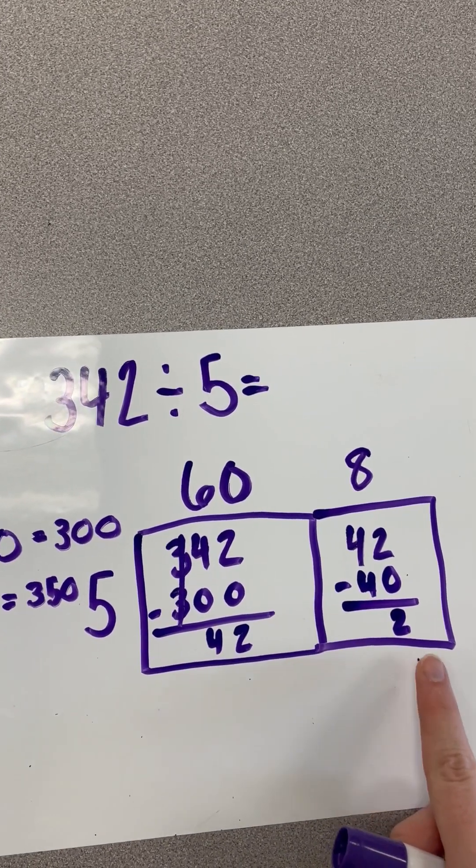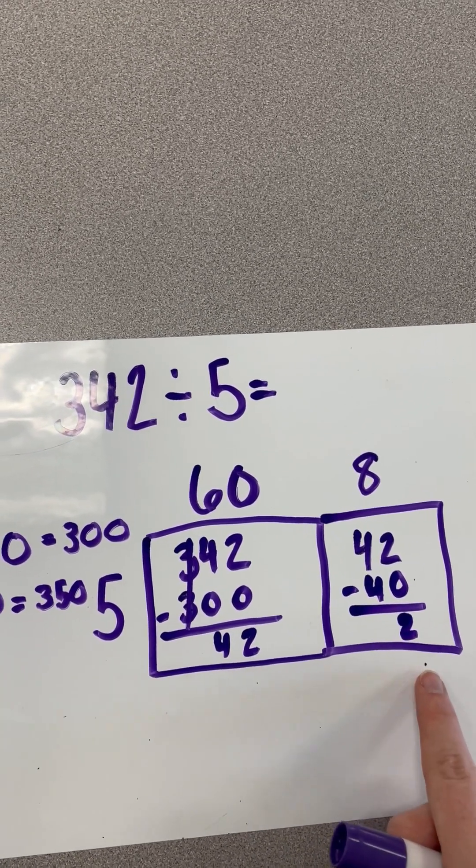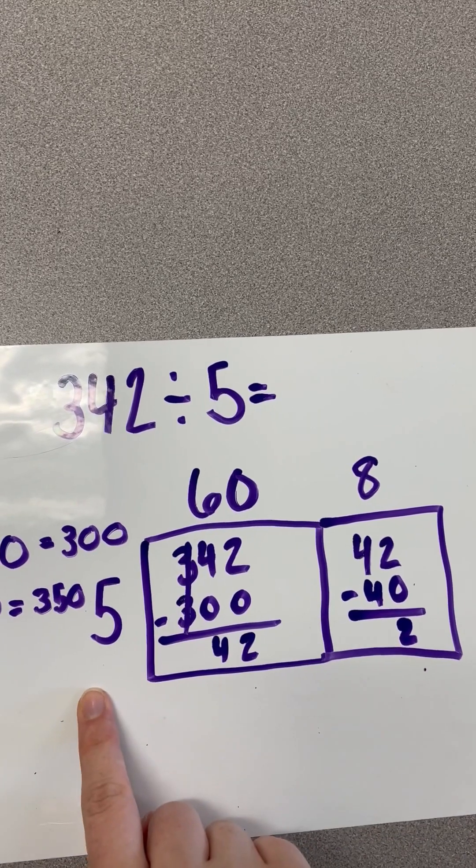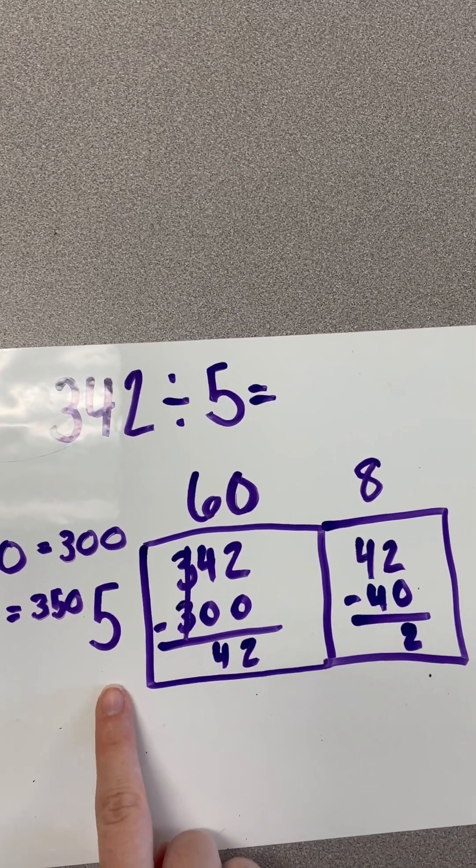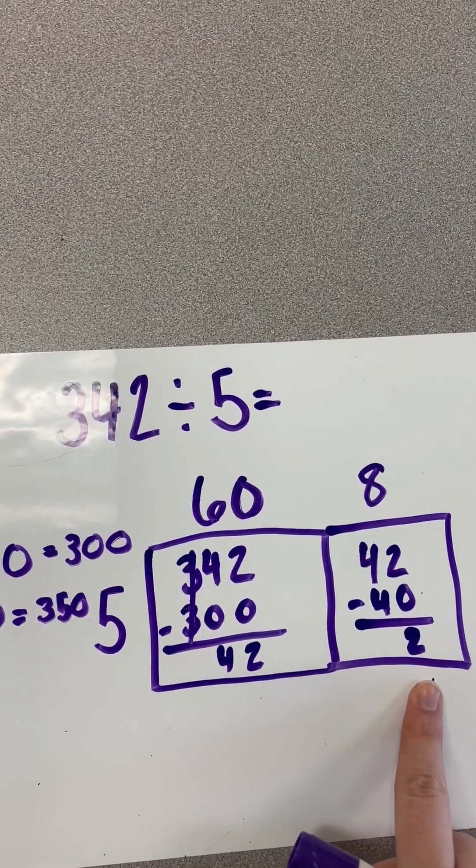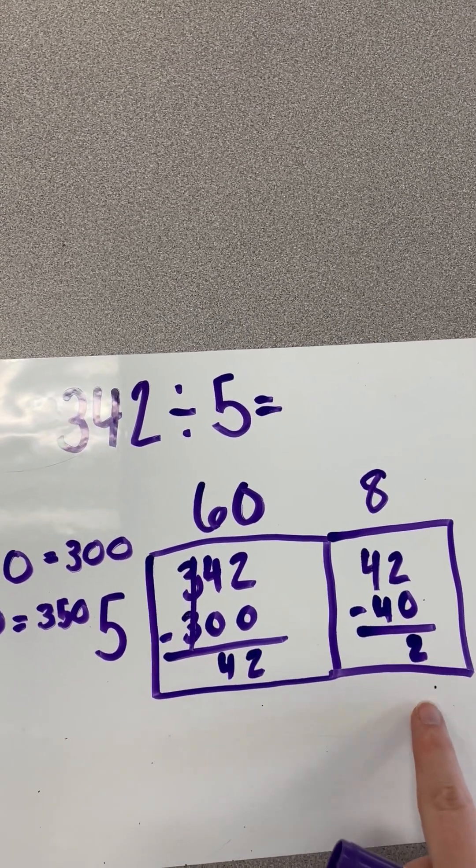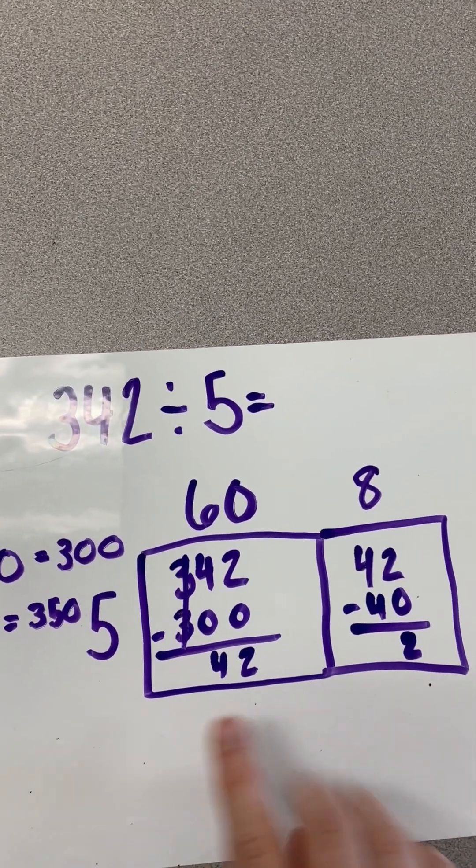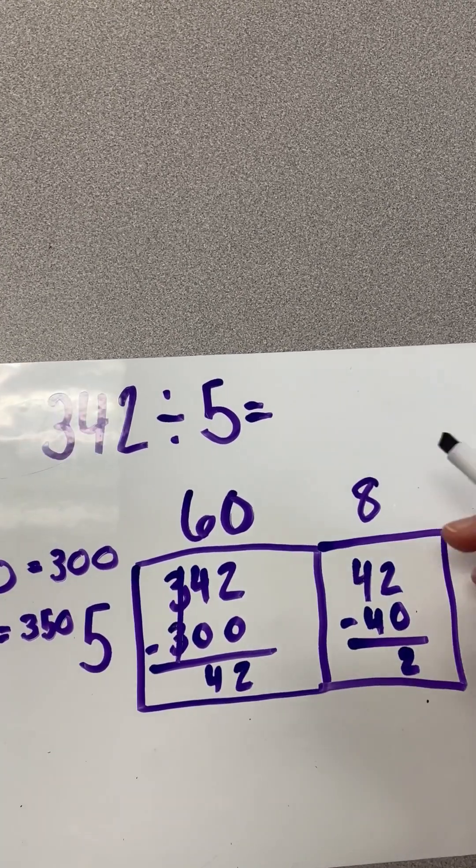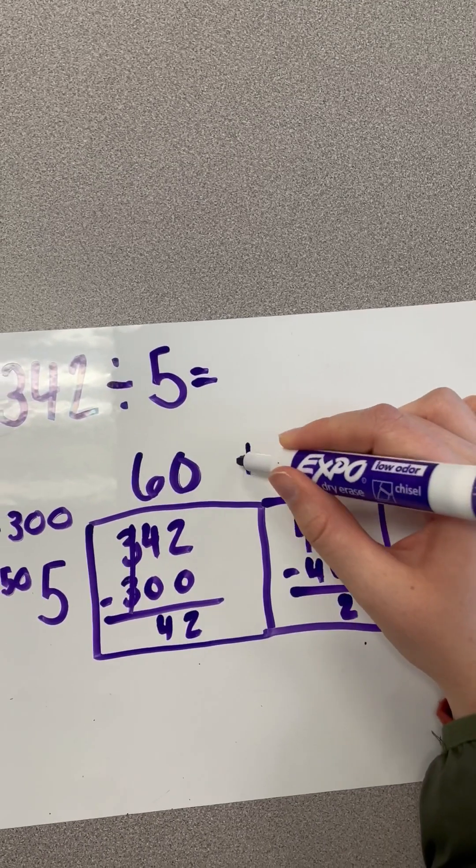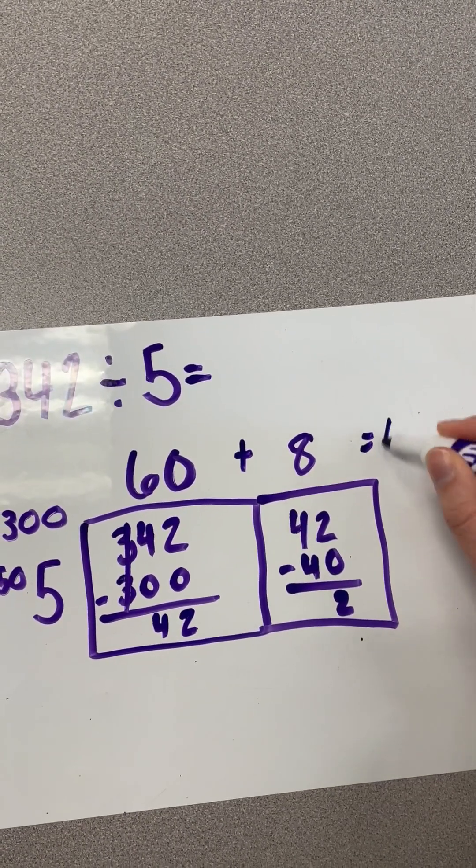Now, we look at this number and say, can we make a complete group of 5 with only 2? If you can't make a complete group of your divisor, then we know that this is going to be a remainder. Because it is left over, it can't make a group. So, we're going to add our 2 numbers up here, which would be 68.